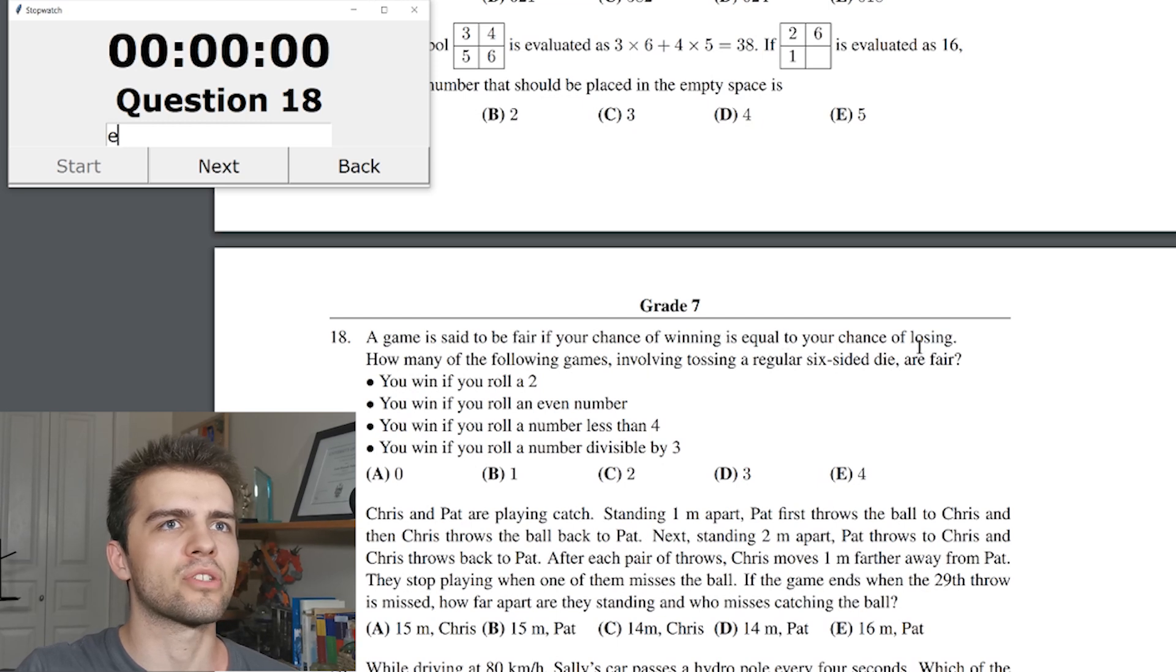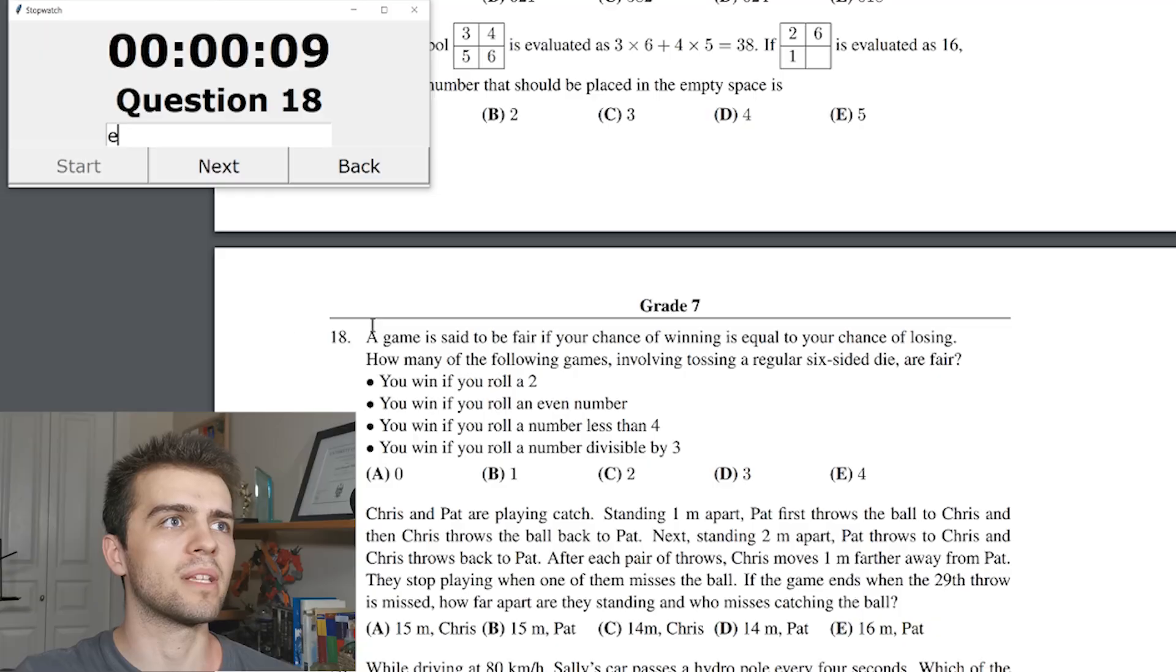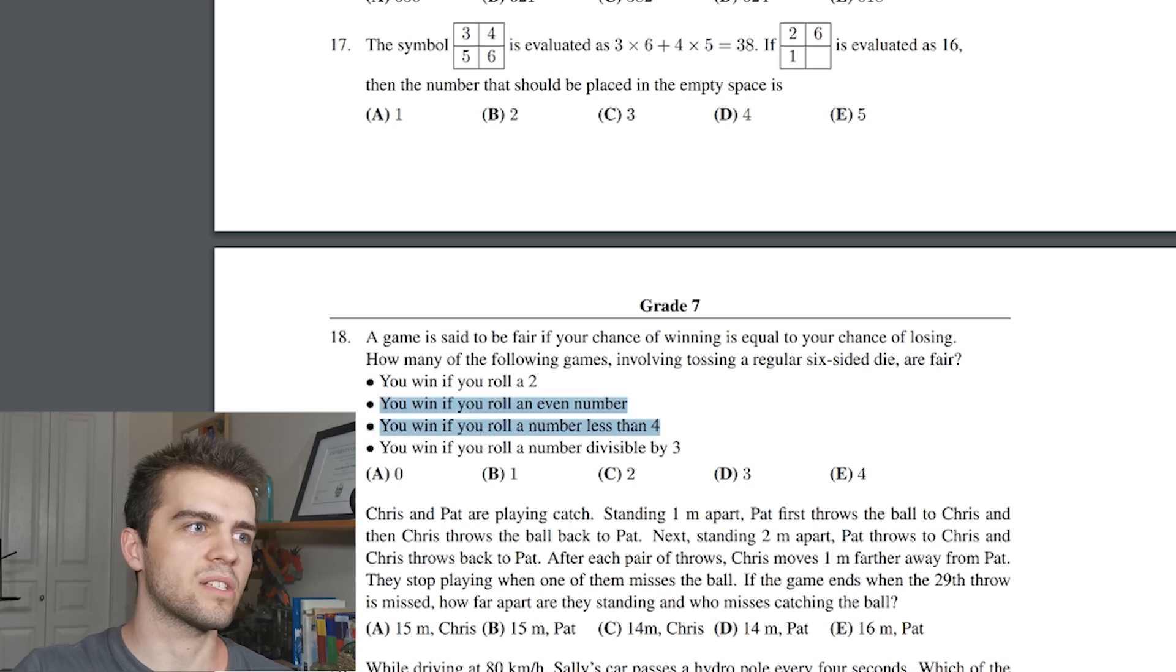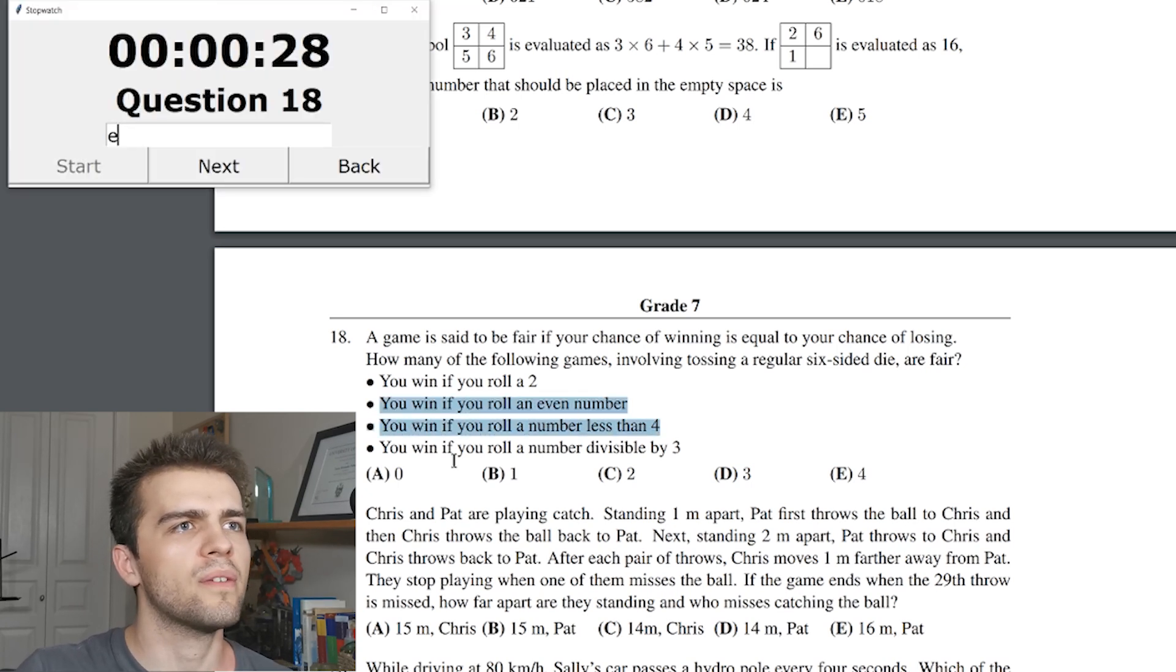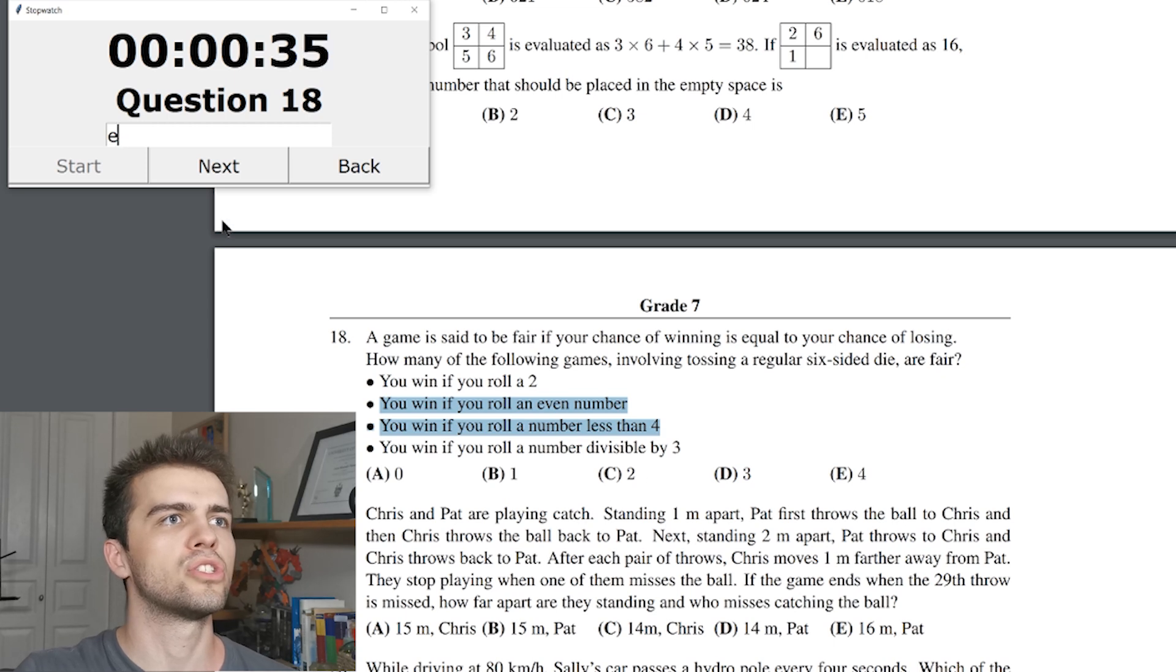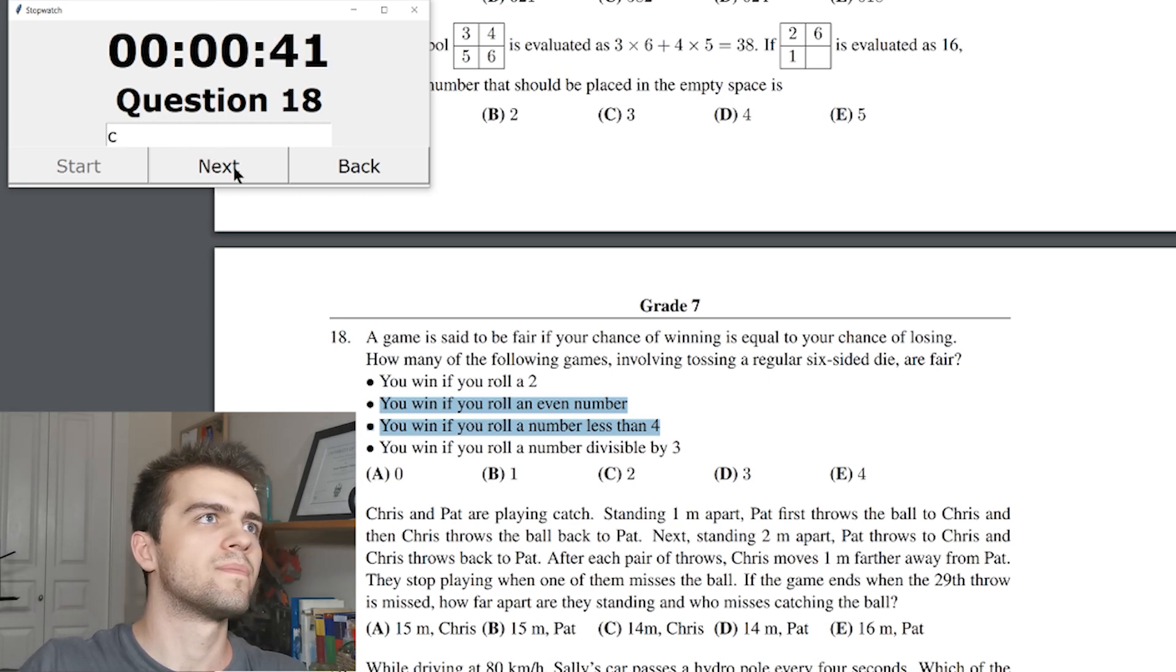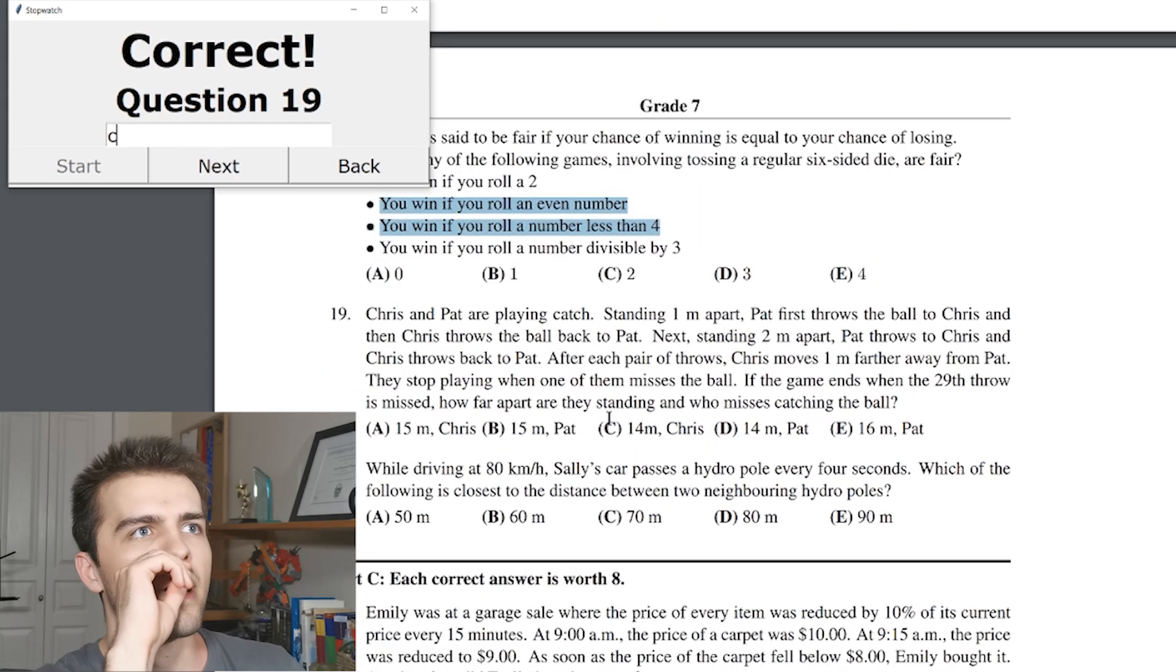Question 18. A game is said to be fair if your chance of winning is equal to your chance of losing. Okay. I agree here, which in this particular case, this game I'm playing right now, my chance of losing is very high and much higher than my chance of winning. So this game's very unfair. But going back to the question, how many of the following games involved in tossing your regular six side of die are fair? You win if you roll a two, not fair. You win if you roll an even number. That's fair. You win if you roll a number less than four, one, two, three, four, five, six. So this is fair. And this is fair. My clock went away. These two are fair. You win if you roll a number divisible by three. Three, six. No, that's not fair. Only the two of them are fair. So the answer is two or C. Correct. Good, good, good, good.